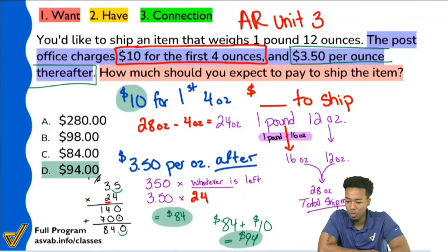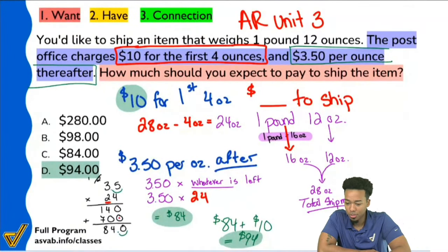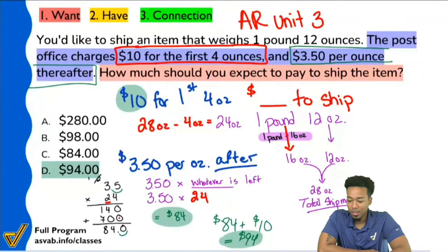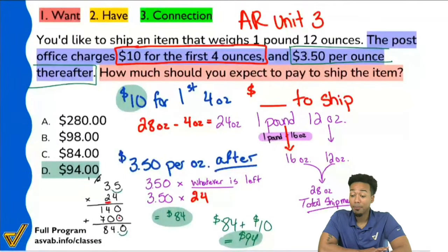If you got C, the reason is you simply forgot to add back the $10 from the first four ounces — you already paid $10 for those, so you don't count them again in the $3.50 calculation.